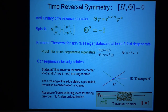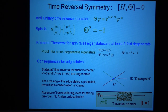[Student question: In Kramers' theorem, did you use the fact that the spin is half-integer?] Yes — I use the fact that the spin is an odd half-integer. The minus sign that you get when you rotate a spin is: if it's a half-integer, you get a minus sign; if it's an integer spin, you get a plus sign.